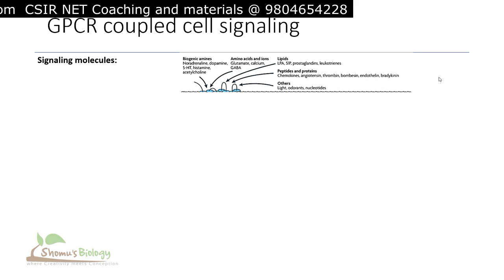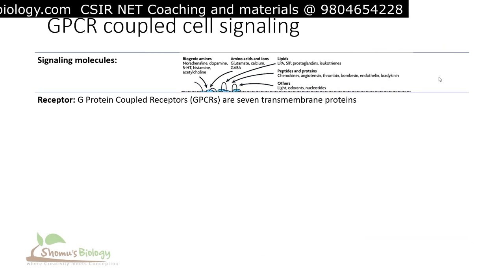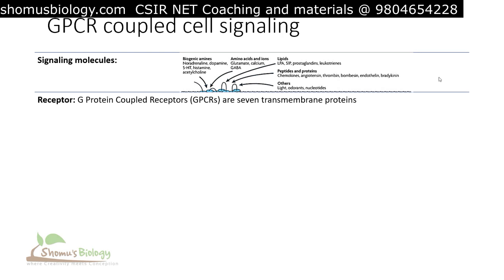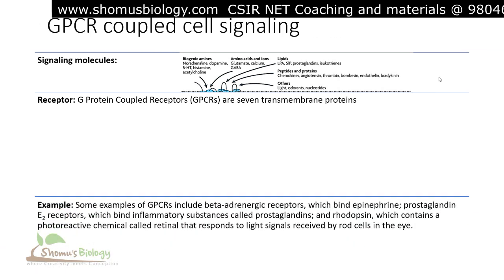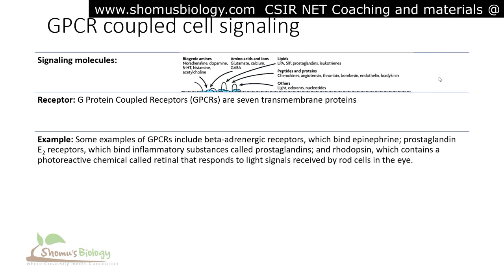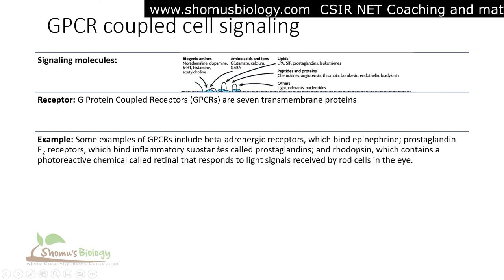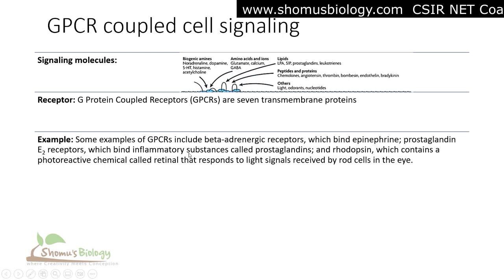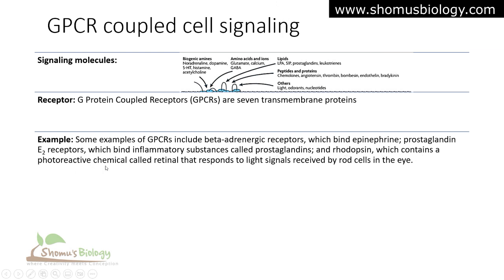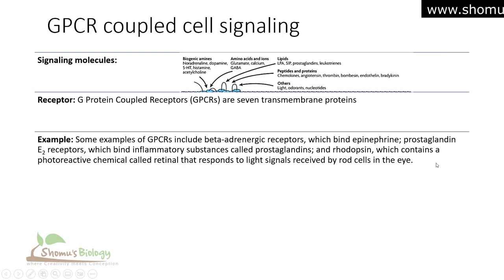The GPCR receptor is a seven transmembrane protein, spanning the membrane seven times. Examples of GPCRs include beta adrenergic receptors, which bind epinephrine; prostaglandin E2 receptors, which bind inflammatory substances called prostaglandins; and rhodopsin, which contains a photoreactive chemical called retinal that responds to light signals received by the rod cells of the eye. These illustrate the diverse array of GPCR-coupled cell signaling.